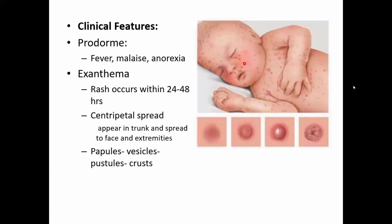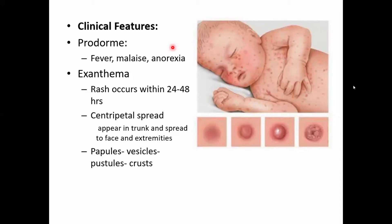Clinically, chickenpox first presents with a prodrome of fever, malaise, and anorexia, then rash appears within 24 hours — often on the first day of fever. There is centripetal spread: the rash appears on the trunk first, then spreads to the extremities and face. If you do not examine the chest, you may miss the rash on day one.